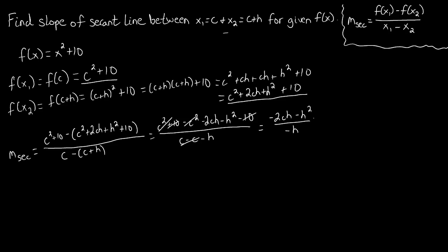Let's look and see what else we can do to simplify this. We see that each term here, because this negative 2ch is one term, the product of a couple of different things, then we have minus h squared, which is h times h, over a negative h.